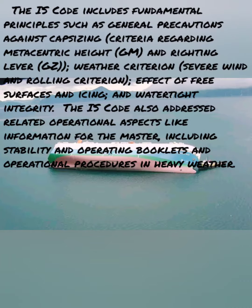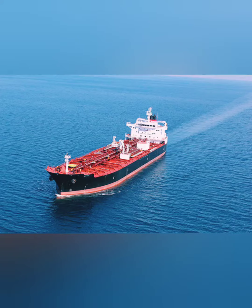The intact stability code includes fundamental principles such as general precautions against capsizing, criteria regarding metacentric height and righting lever, weather criteria, effect of free surface, icing, and watertight integrity. The code also addresses operational aspects like information for the master, including stability and operating booklets and operational procedures in heavy weather. Basically, the intact stability code sets out conditions which must be complied with and demonstrated by the master on a GZ curve before the ship sails out to sea.